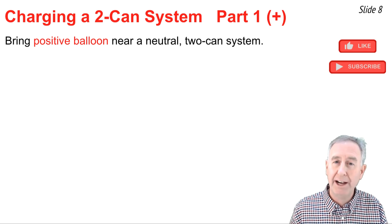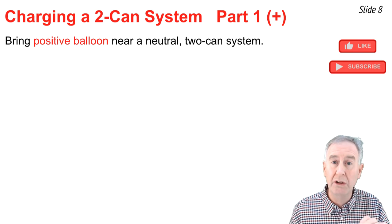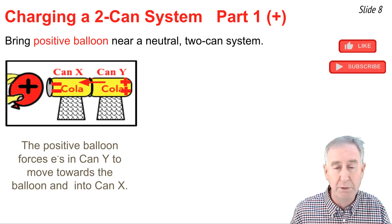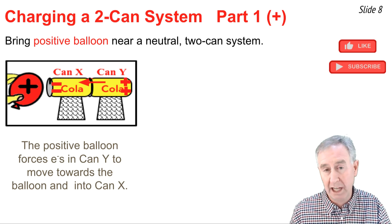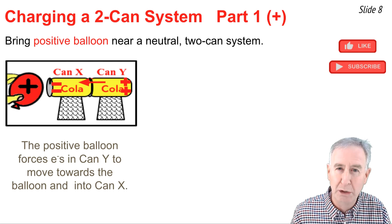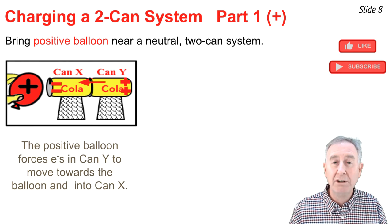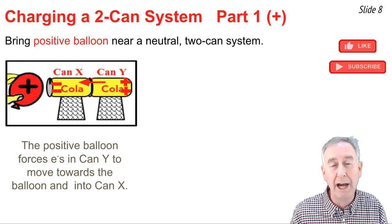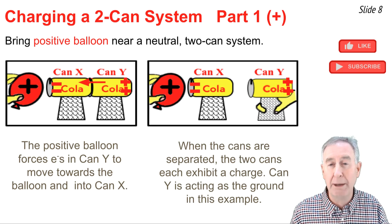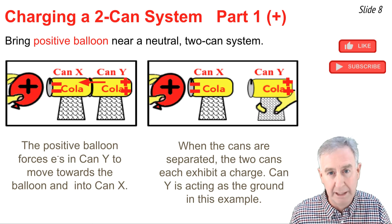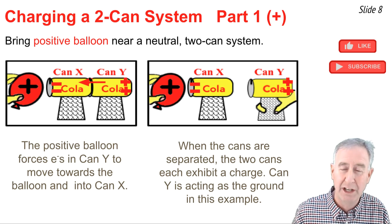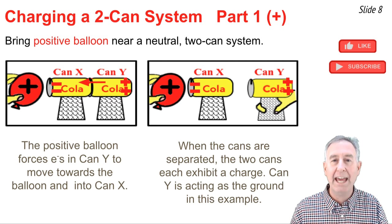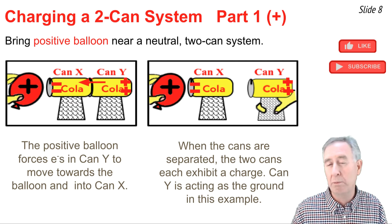Now consider a slightly different induction charging situation: a positively charged balloon brought near a system of two neutral conducting pop cans touching one another. As the positively charged balloon is brought near can X on the left, electrons in can Y on the right are drawn towards the balloon — opposites attract. The electrons leave can Y and enter can X, leaving can X with an overall negative charge and can Y with an overall positive charge. Then we simply separate the cans, and now X has a permanent negative charge and Y has a permanent positive charge. In our original model, the balloon is object A, can X is object X, and can Y is object G.